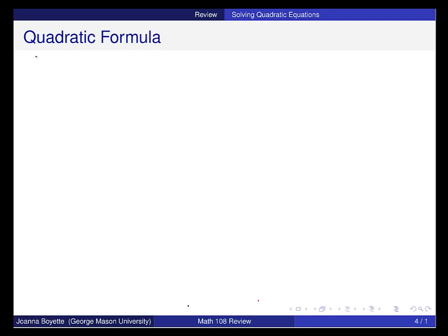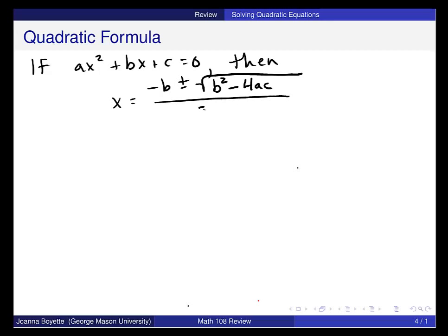Using the quadratic formula, if I have a quadratic equation, and all quadratic equations can be written like this, then the solutions to this are given by negative b, x is equal to negative b plus or minus the square root of b squared minus 4ac all over 2a.